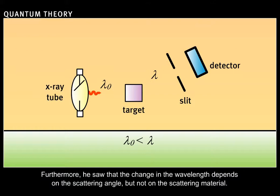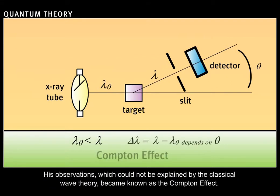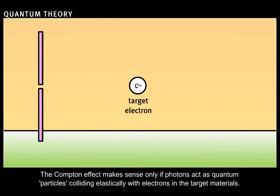Furthermore, he saw that the change in the wavelength depends on the scattering angle, but not on the scattering material. His observations, which could not be explained by the classical wave theory, became known as the Compton effect. The Compton effect makes sense only if photons act as quantum particles, colliding elastically with electrons in the target materials.